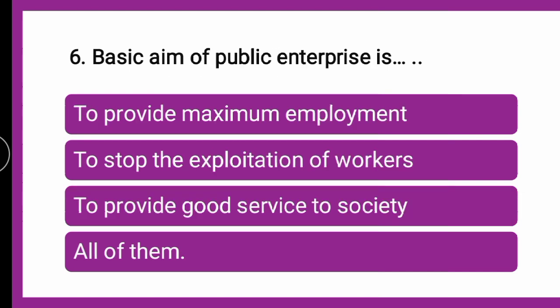Next question: Basic aim of public enterprise is DASH — whether to provide maximum employment, to stop the exploitation of workers, to provide good services to society, or all of them. As discussed in earlier parts, the aims of public enterprise include: providing maximum employment (since it is partly or wholly run by the government), stopping the exploitation of workers, and providing good services to society as the prime aim. So the correct answer is all of them.